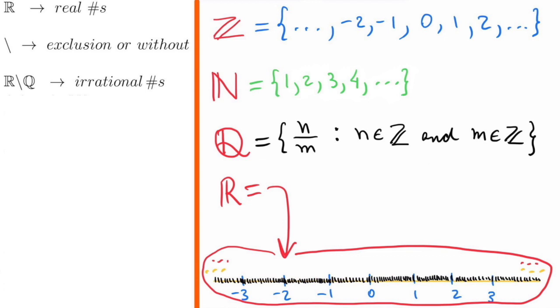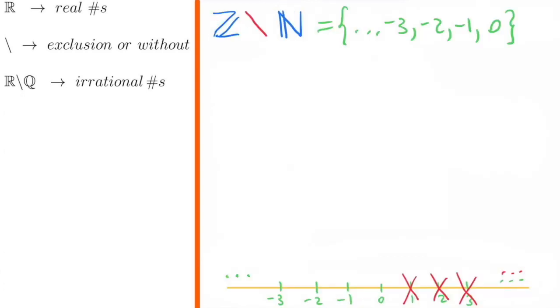The backslash is the notation for exclusion, or without. Therefore, Z backslash N is the set of negative integers with 0 included in it. For the same reason, R backslash Q is the set of real numbers without the rationals, also called the set of irrational numbers.